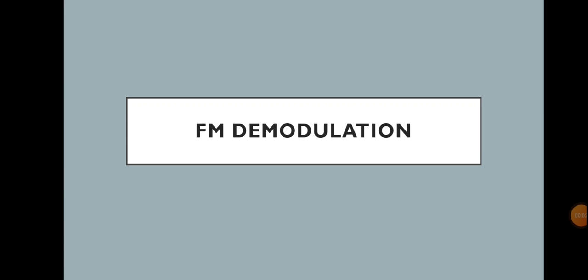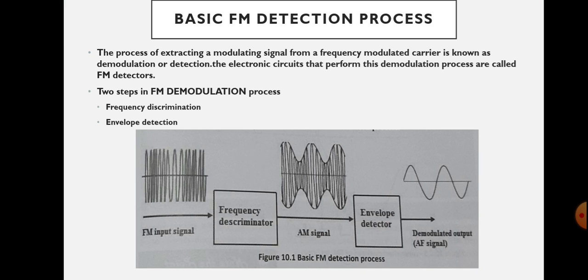Dear students, today we are going to discuss FM demodulation. Demodulation is also called detection, and the process of extracting a modulating signal from a frequency modulated carrier wave is known as demodulation or detection. The electronic circuits that perform this demodulation process are called FM detectors or FM demodulators. Demodulation is the process by which we extract the original information signals from the frequency modulated signal.